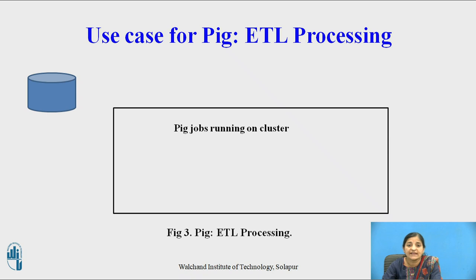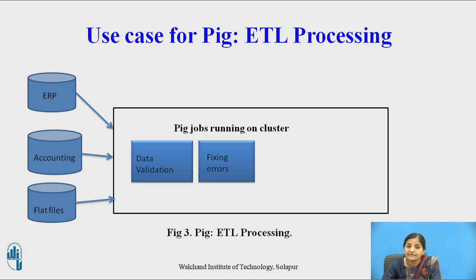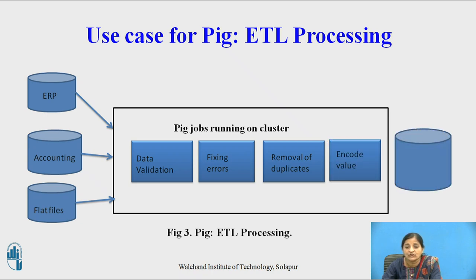Now let us see what ETL processing in Pig means. These are the use cases. Pig runs jobs on clusters. It collects data from multiple sources such as ERP, accounting sections, and flat files. Then it validates the data, fixes errors and removes noise, removes all duplicates, encodes the values, and finally the clean data, which is ready to be analyzed, is stored in the data warehouse.